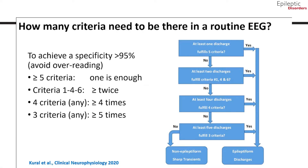In this slide, we will ask the question: how many criteria need to be met in a routine EEG? In order to achieve a specificity of greater than 95%, having met 5 or more out of the 6 criteria, then one sharp wave transient is sufficient to characterize an epileptiform discharge. When criteria 1, 4, and 6 are met, then 2 or more sharp transients are needed to reach greater than 95% specificity. When any 4 of the 6 criteria are met, then 4 or more sharp transients are needed. And finally, if any 3 out of the 6 criteria are met, then 5 or more sharp transients will be needed to achieve a specificity of greater than 95% to characterize an epileptiform discharge.